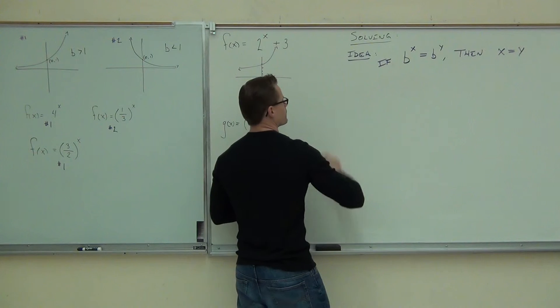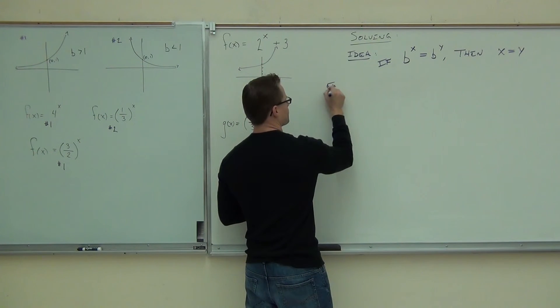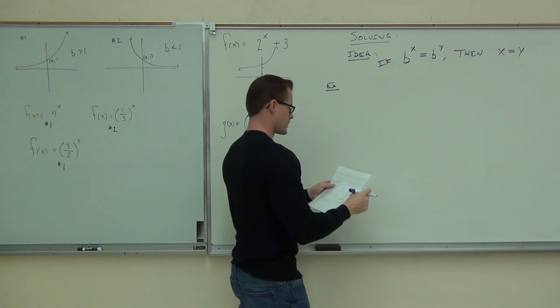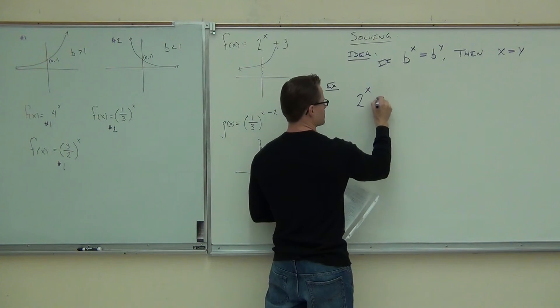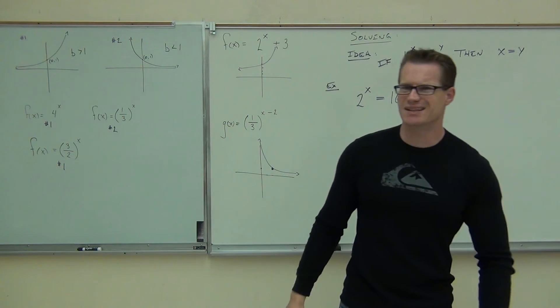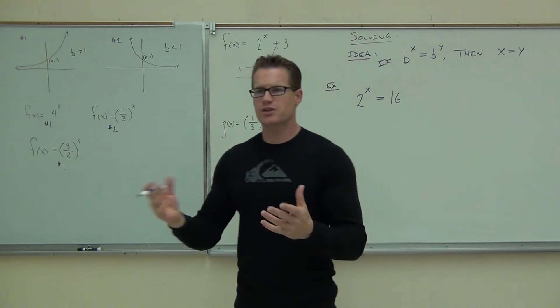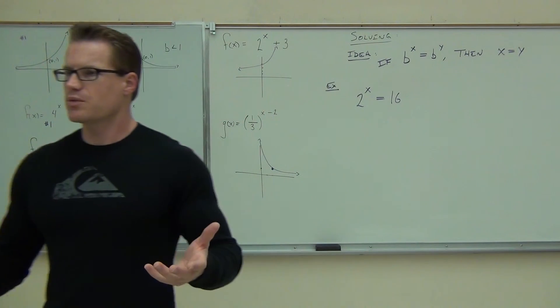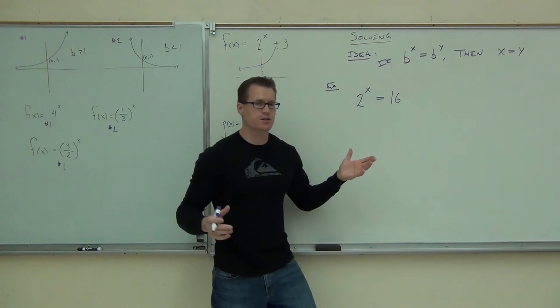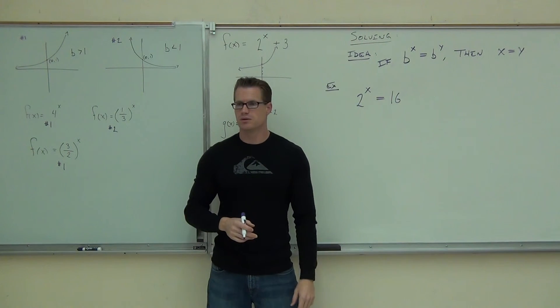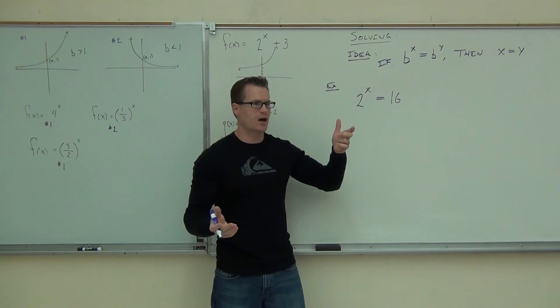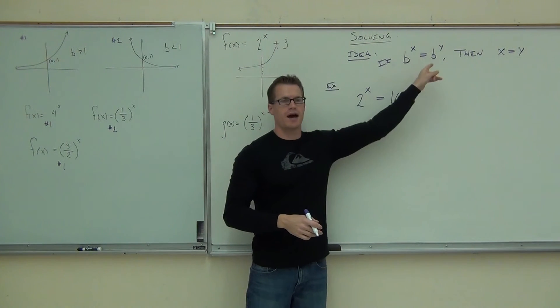2 to the x equals 16. Wait a second. 2 to the x equals 16. I'm trying to solve for x, right? But really, we have no algebraic way to manipulate this problem to solve for x. What are you going to do? Are you going to divide by 2? That's not going to work because x is still in the exponent, right? Wait a second. How do I solve for x in this case? We're going to use this fact.